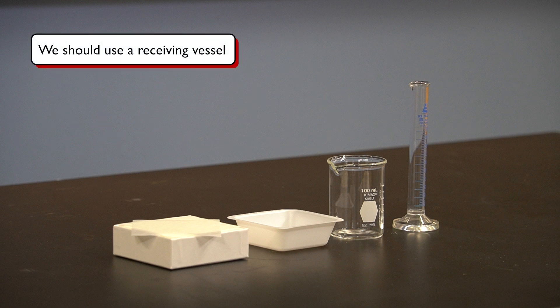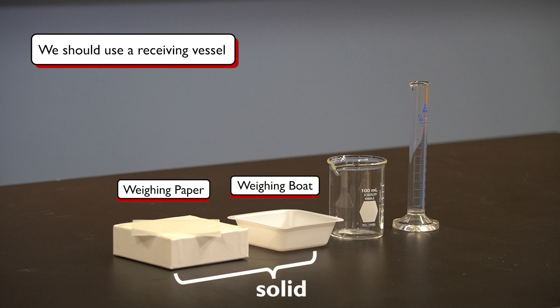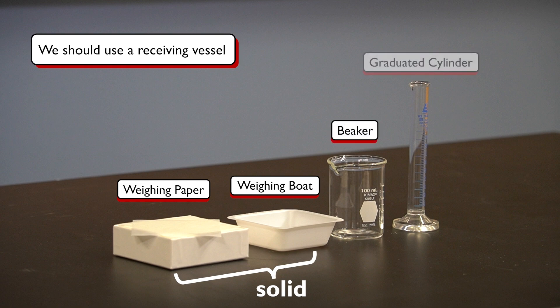This receiving vessel should be lightweight, and the choice varies depending on the type of sample. Options include a piece of weighing paper or a weighing boat for solid substances, or a small beaker or graduated cylinder for liquid samples.